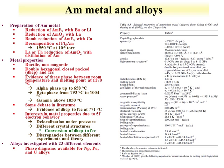A number of americium alloys have been prepared. The ones important for the fuel cycle include neptunium, plutonium, and uranium alloys, and the phase diagrams of these alloys are available.